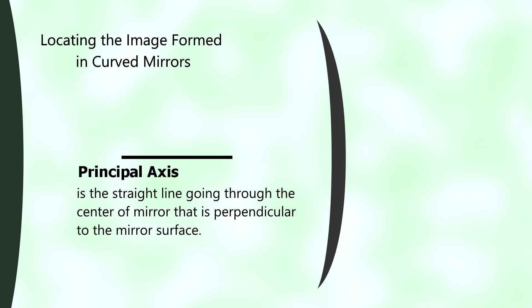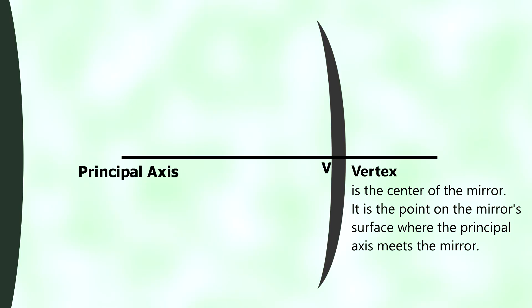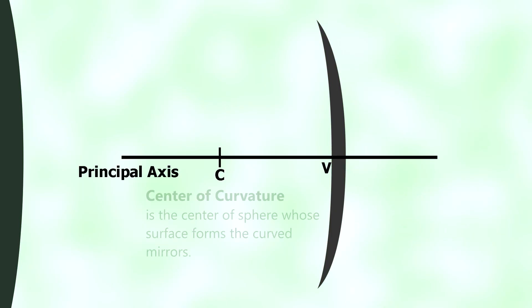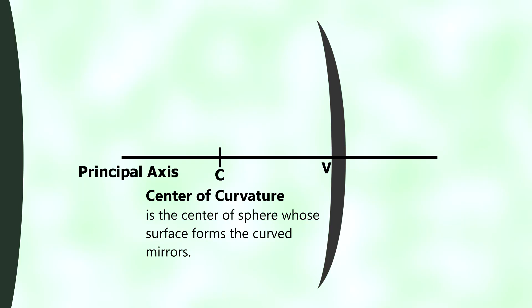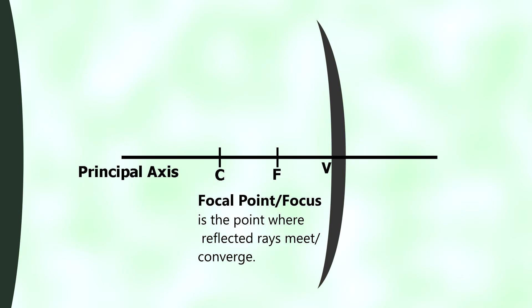To locate and describe the image using a ray diagram, we consider the following parts of our mirrors. The principal axis is the straight line going through the center of the mirror that is perpendicular to the mirror surface. The vertex V is the center of the mirror — the point on the mirror surface where the principal axis meets the mirror. The center of curvature C is the center of the sphere whose surface forms the curved mirror. The focal point F lies between the vertex and the center of curvature, so the distance from C to F equals the distance from F to V.